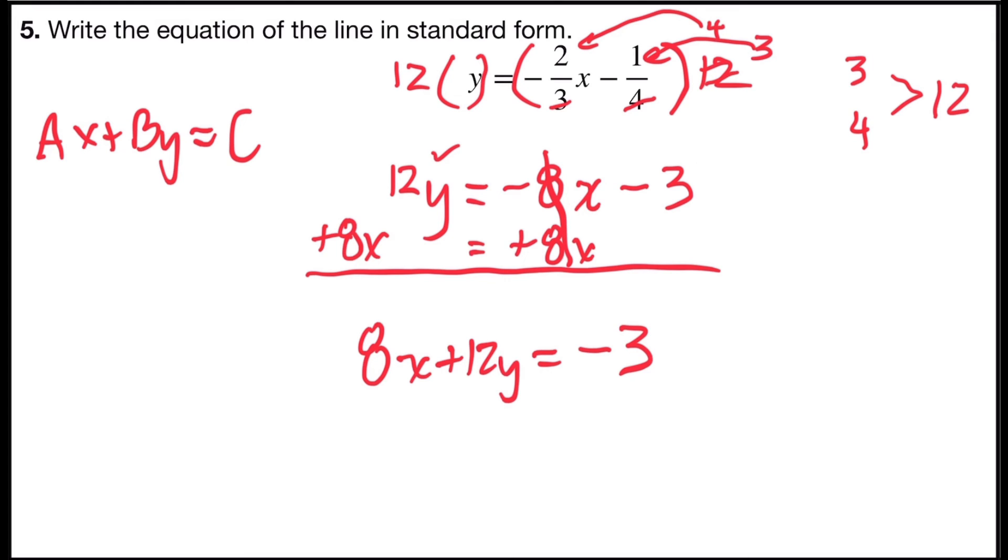So now I have my equation in standard form. No fractions, no decimals. Eight, twelve, and negative three are integers, and a is positive. So my equation would say eight x plus twelve y equals negative three.